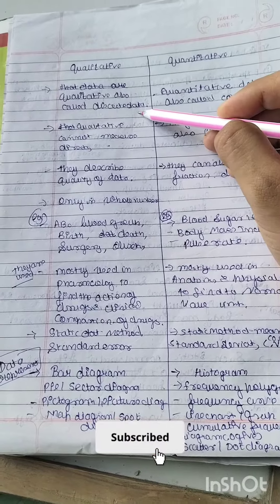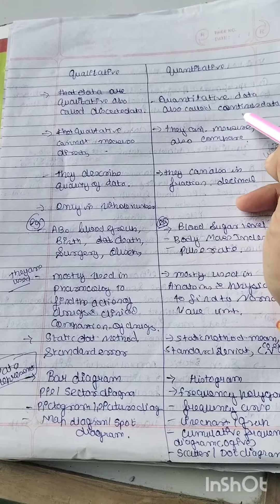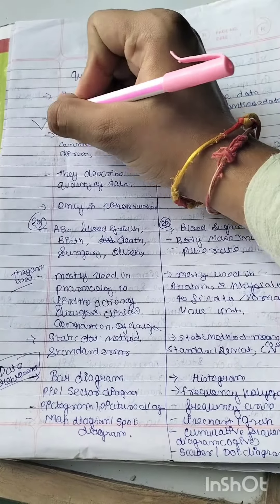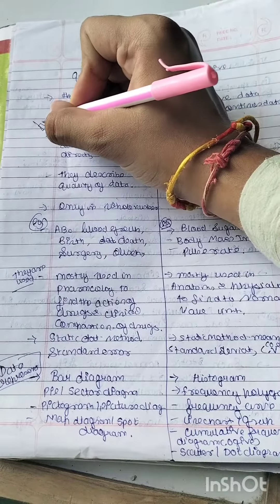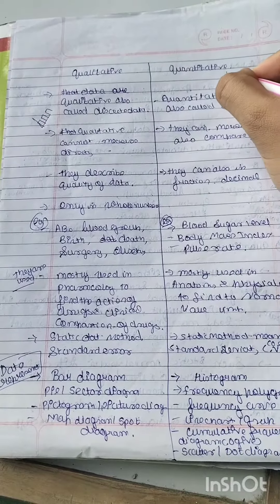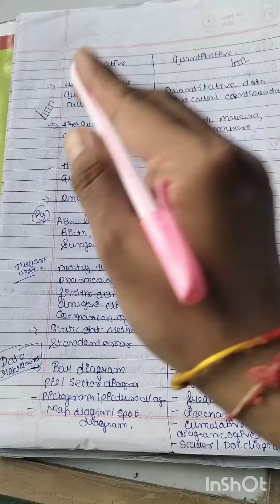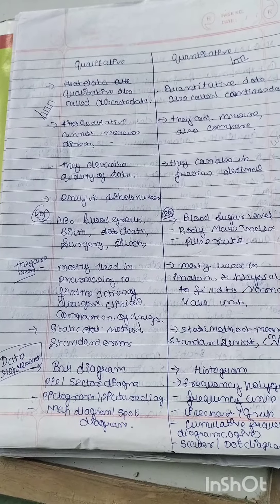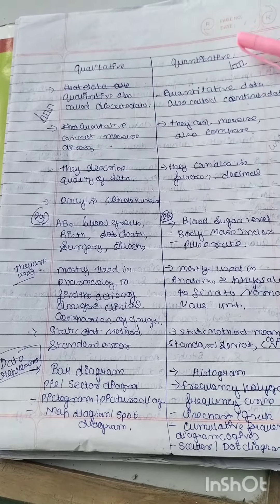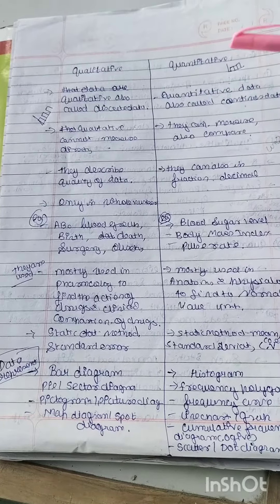Qualitative data is a discrete data, and quantitative data is a continuous data. So if it's qualitative, it's discrete data, and if it's quantitative, it is in a continuous form. You can find the difference between them — qualitative data can be measured directly, and quantitative data cannot be measured directly.